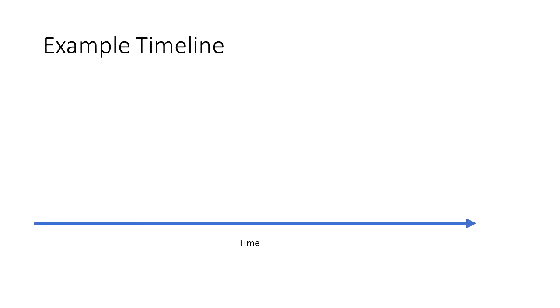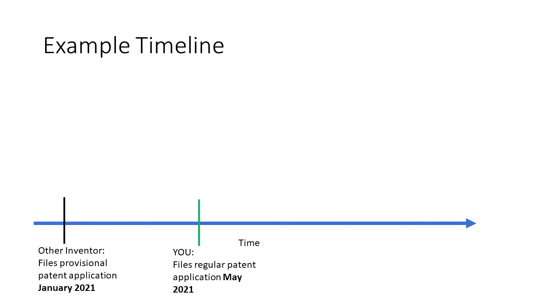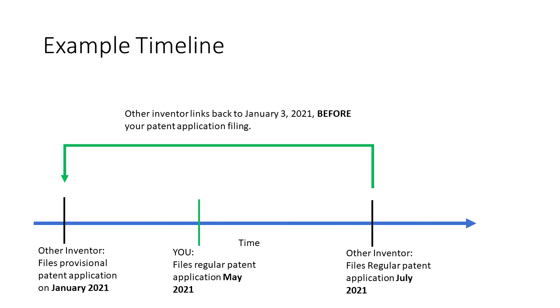First let's illustrate why you would want to do this with a basic example. We'll start with a timeline. In this example another inventor files a provisional patent application in January of 2021. You come along and file a regular patent application for something that is pretty similar in May of 2021. Then the other inventor files a regular patent application for this invention in July of 2021, which is of course after you filed your regular patent application. But the other inventor's regular application links back to the provisional application of January 2021, which predates your patent application.